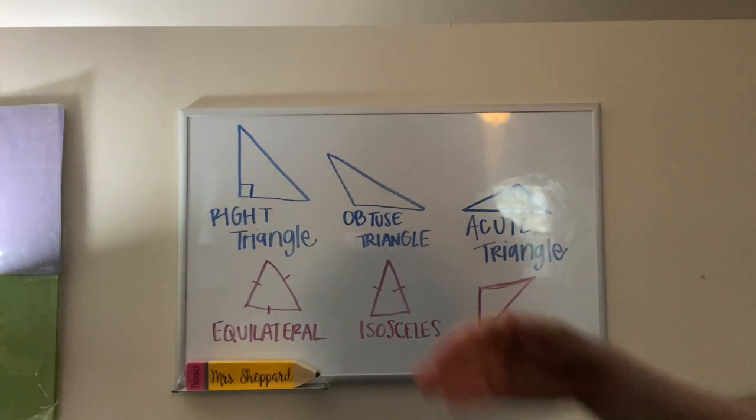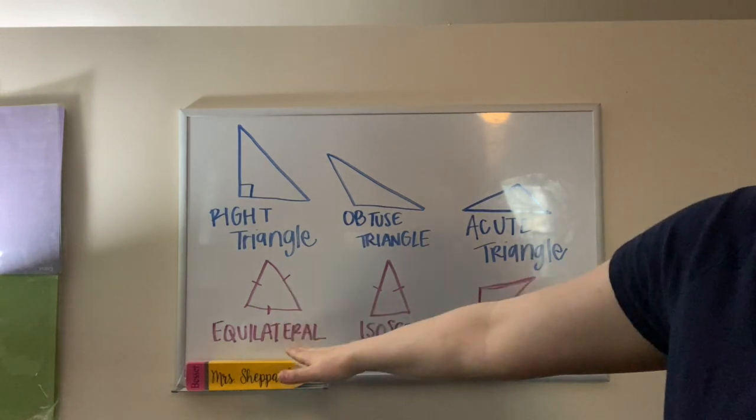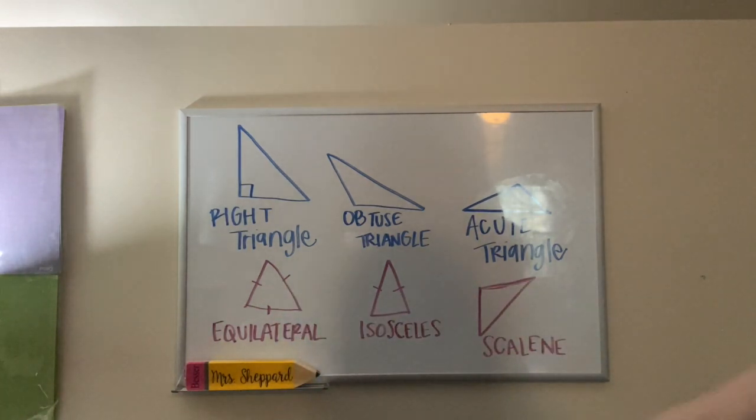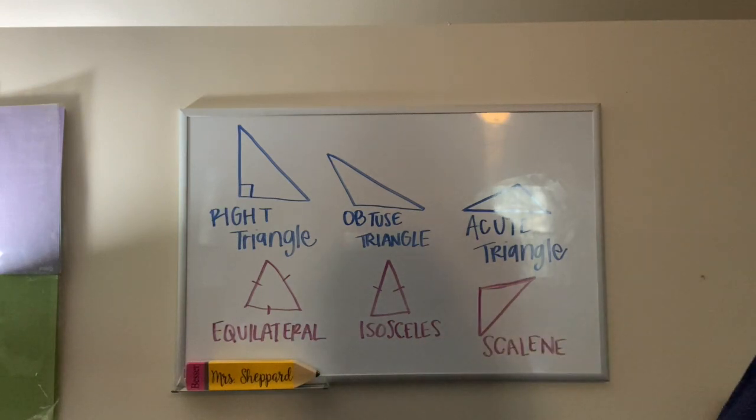We also can classify triangles by their sides. We have an equilateral triangle, which has all equal sides. We have an isosceles triangle, which has two equal sides. And we have a scalene triangle, which has all different size sides.